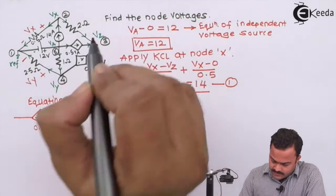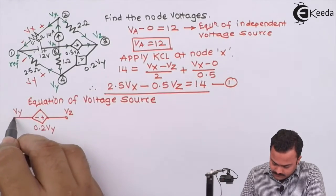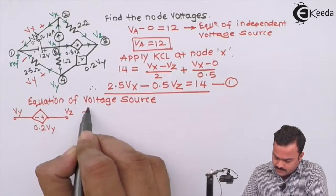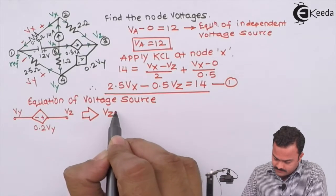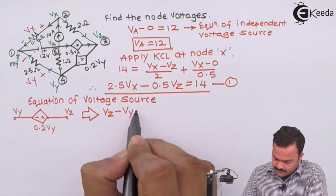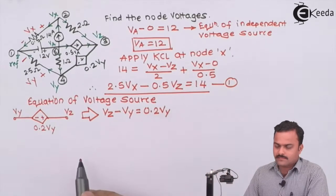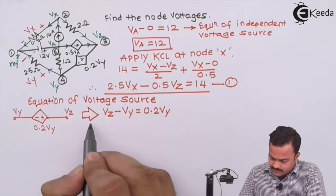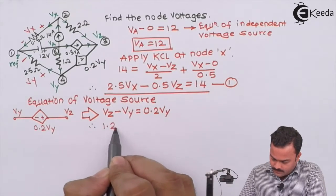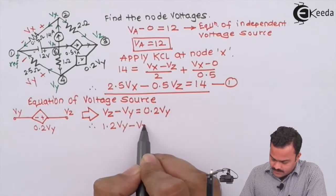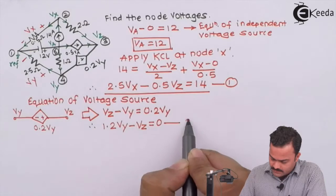For the dependent voltage source, the positive end is connected to Vz and the negative to Vy. This gives us Vz minus Vy equals 0.2Vy. Upon simplifying, we get 1.2Vy minus Vz equals 0. This is equation number 2.